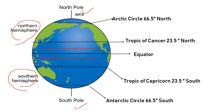The Tropic of Cancer is the parallel of latitude that is approximately 23.5 degrees north of the equator. It is the most northern circle of latitude on earth where the Sun can appear directly overhead at noon.